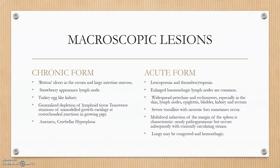Macroscopic lesions vary between chronic and acute forms. The classic macroscopic lesion in classical swine fever is button-shaped fibronecrotic ulcers in the cecum and large intestine. A strawberry appearance of the lymph node occurs due to pinpoint petechial hemorrhages on the lymph node surface. The kidney shows petechial and ecchymotic hemorrhages, giving a turkey egg-like appearance. The mnemonic S-B-T can help recall the main lesions in the chronic form. Anasarca and cerebellar hypoplasia are also lesions. Since the virus multiplies in bone marrow, costochondral junctions show transverse striations. Both acute and chronic forms show leukopenia and thrombocytopenia.